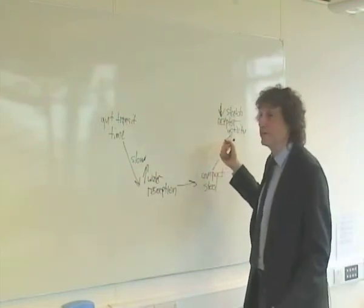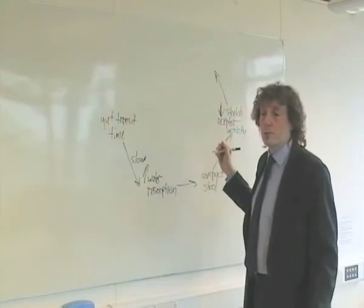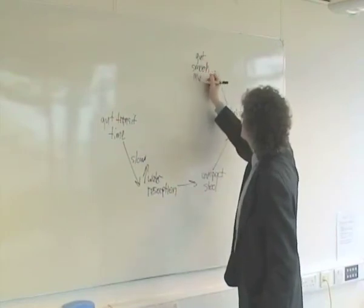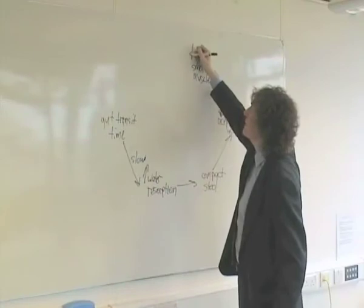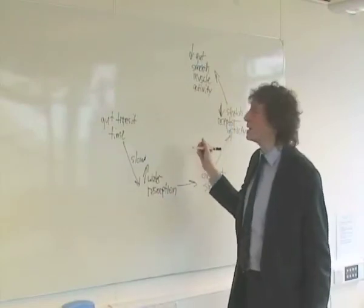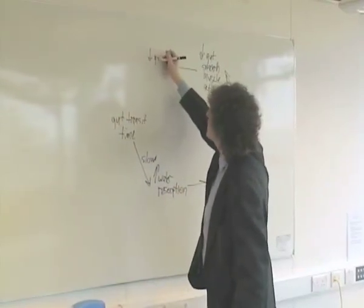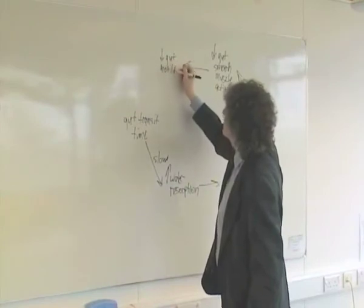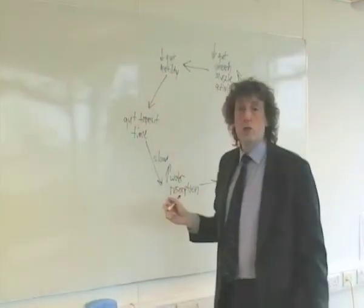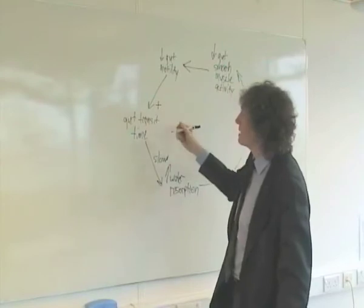This decrease in sensor activity will be sent by the nervous system to the nearby effectors, which are the muscle cells. The gut-smooth muscle will have a decreased activity. This decreased activity in gut-smooth muscle is going to ultimately result in decreased gut motility. And that decreased gut motility — the final physical result — is essentially the return of our positive feedback loop, which leads to an increase in gut transit time.